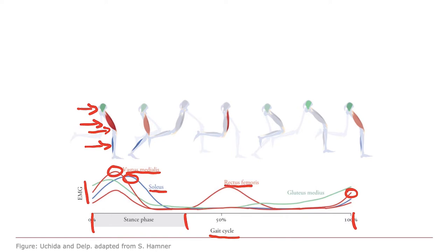Rectus femoris is interesting because it blips on during stance just like the other quadriceps, but you see rectus femoris active early in this swing cycle to accelerate the limb forward. So you see rectus femoris active here pulling the limb forward.